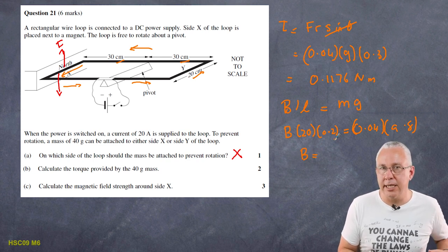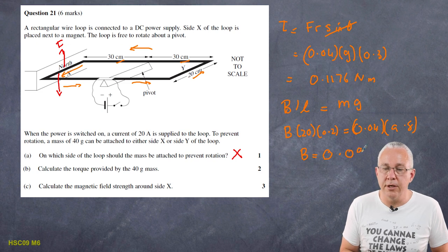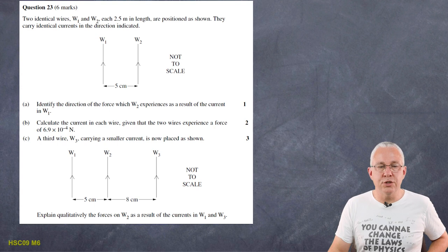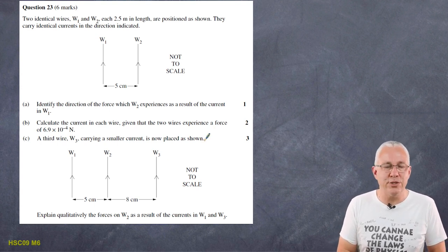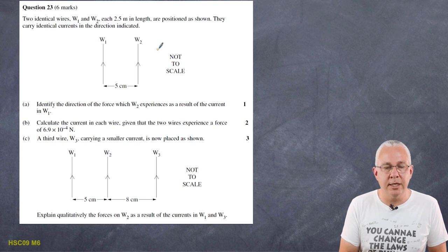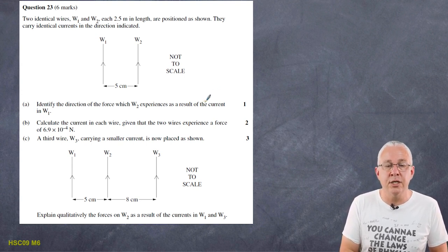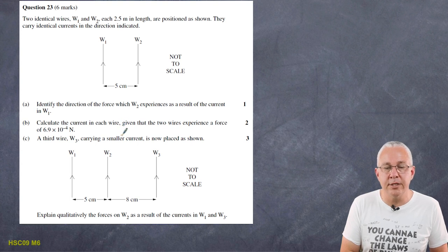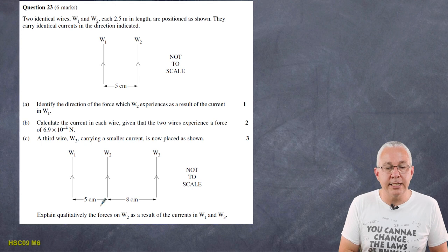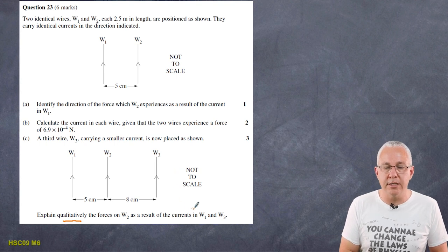Question 23: two identical wires W1 and W2, each 2.5 meters long, carry identical currents as shown. We're asked three things: identify the direction of the force W2 experiences due to W1; calculate the current given that the wires experience a force of 6.9×10⁻⁴ N; and explain qualitatively the force on W2 due to both W1 and a third wire W3 carrying a smaller current placed as shown.